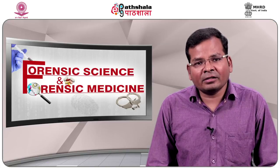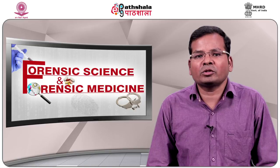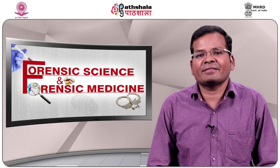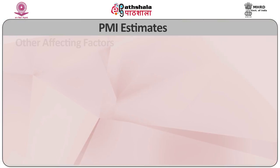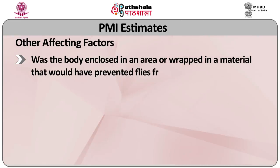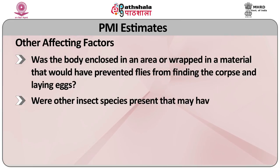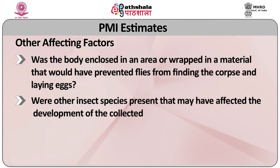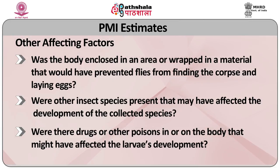They will also collect weather data related to the daily temperature, high and low, and precipitation for the period of time before the body was discovered to the time the insect evidence was collected. Other factors that might affect post-mortem interval estimation include: whether the body was enclosed in an area or wrapped in material that would have prevented flies from finding the corpse and laying eggs; whether other insect species were present that may have affected the development of the collected species; and whether drugs or other poisons in or on the body might have affected larval development.